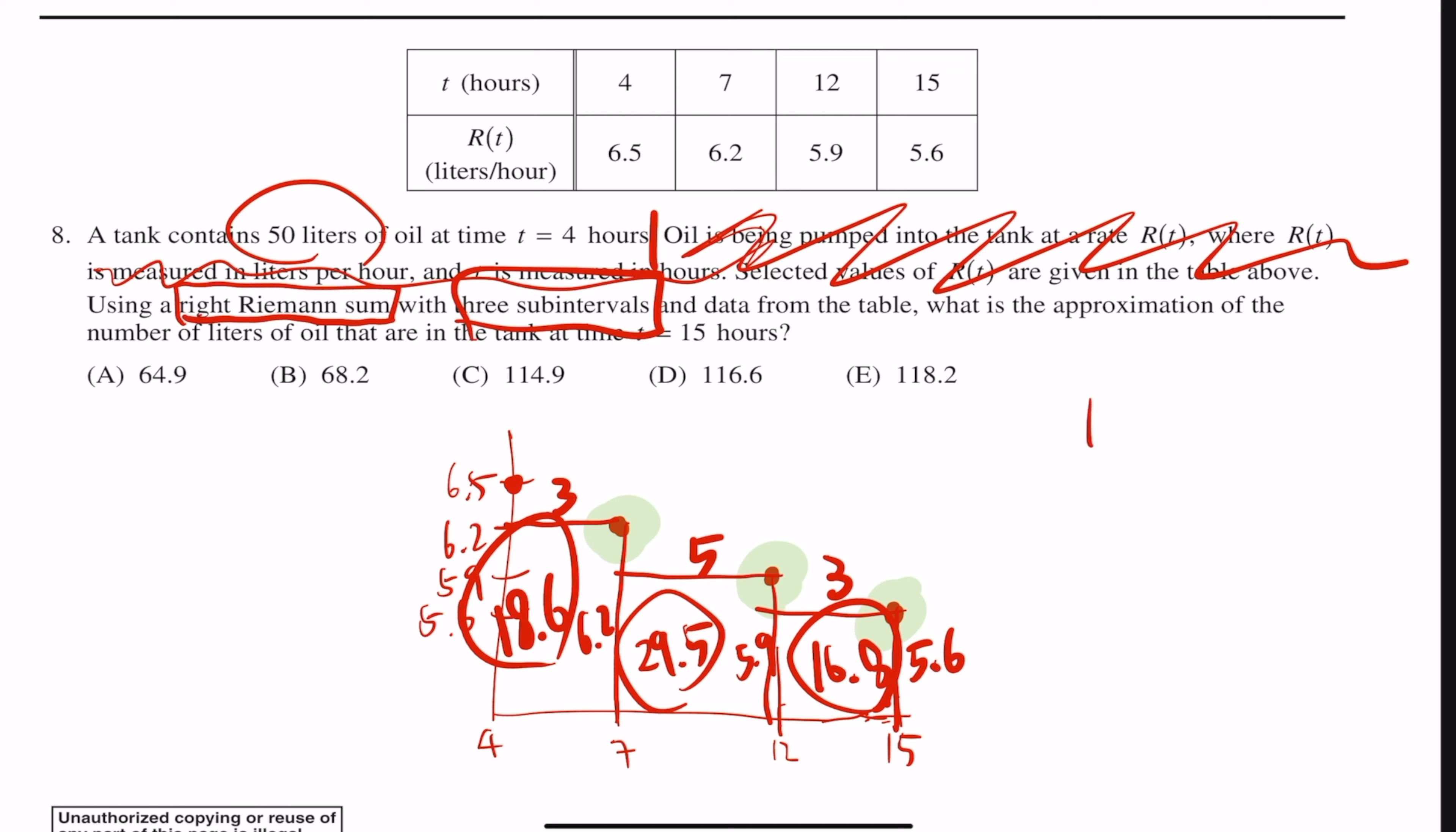So when you just go in and add them all up, 18.6, 29.5, and 16.8, add them all up, and you should get 64.9. Now that is how much you got through the time period from t equals 4 all the way through t equals 15.